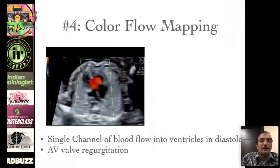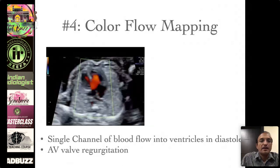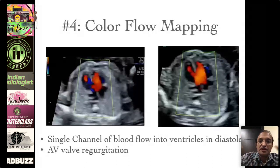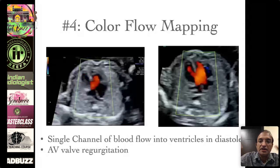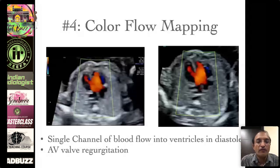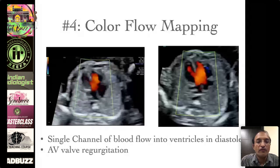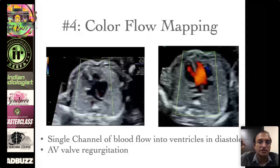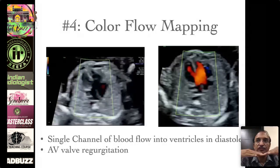The fourth feature is when you put color, you find a single channel of blood flow into the ventricles instead of two separate channels. As we can see in this movie, you can also make out some atrioventricular valve regurgitation. The two important imaging points: in the diastolic frame you find a large defect in the crux of the heart, and in the systolic frame you see the loss of offsetting or the linear insertion.